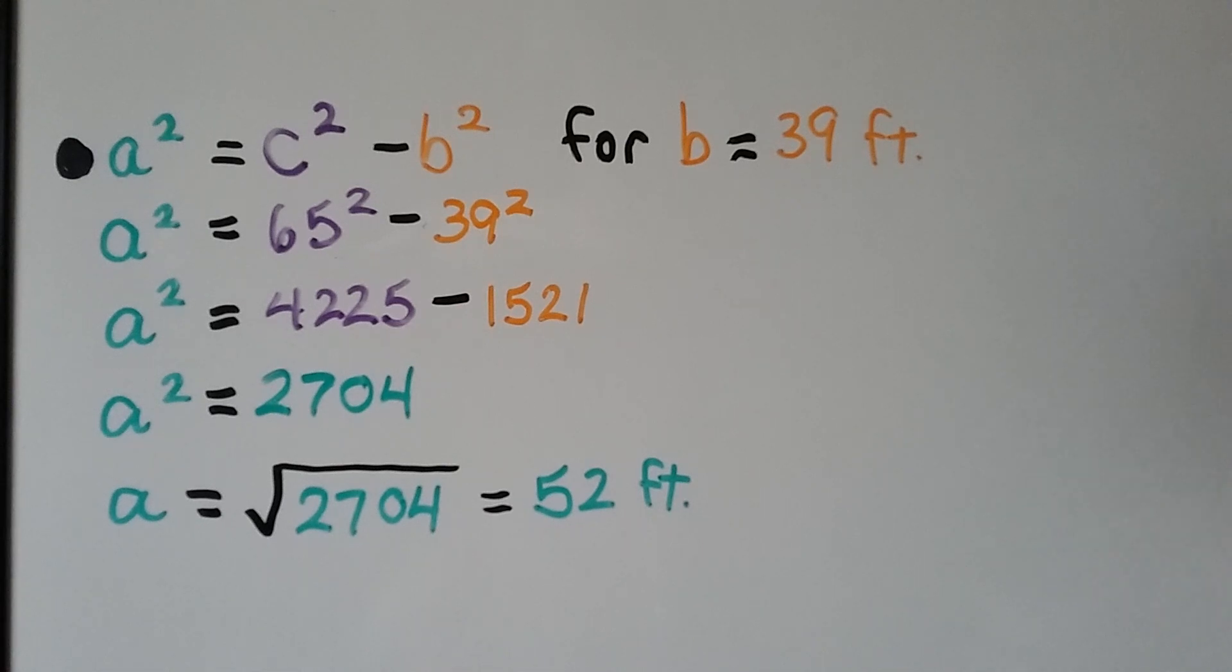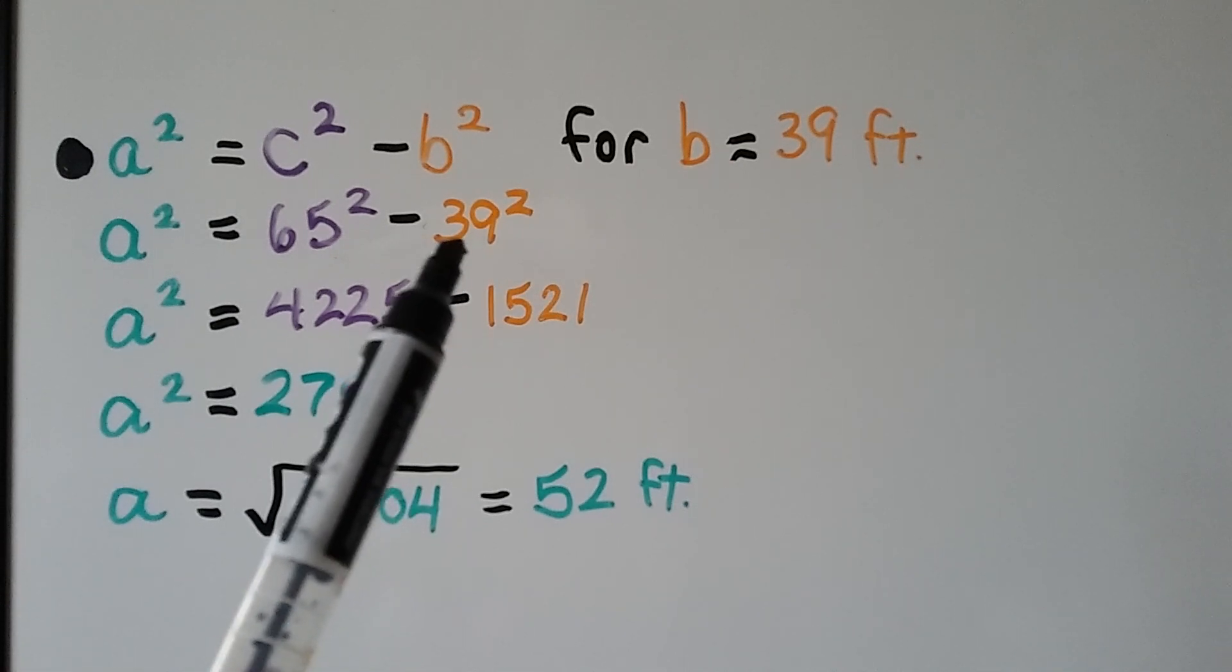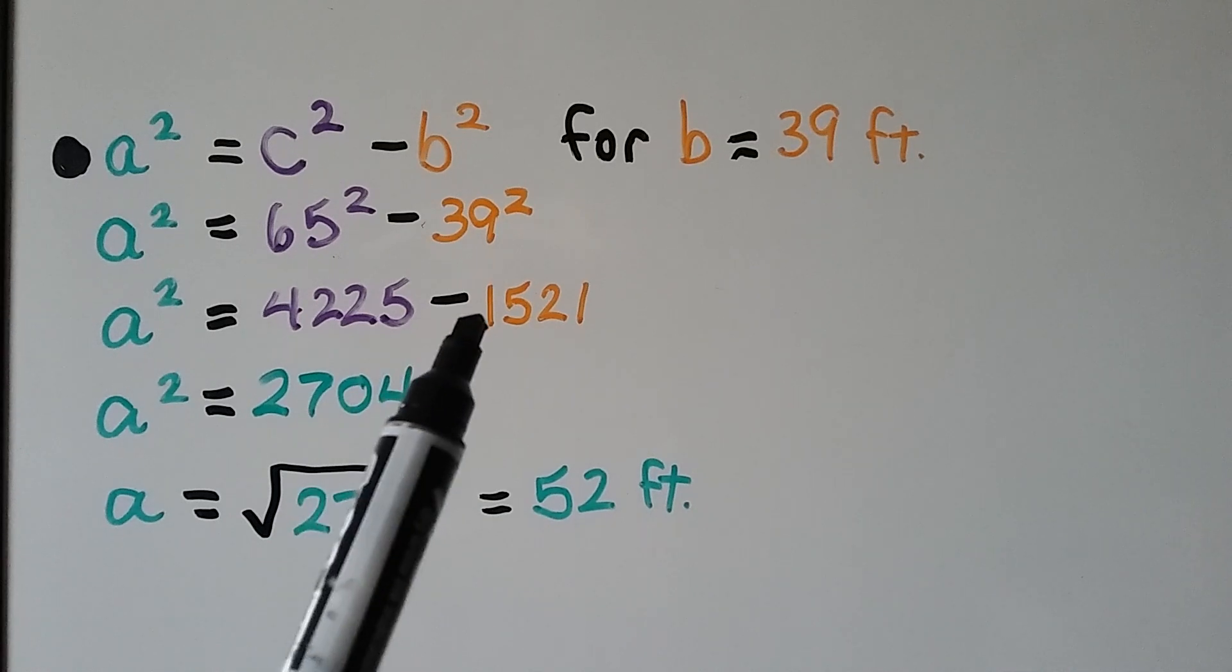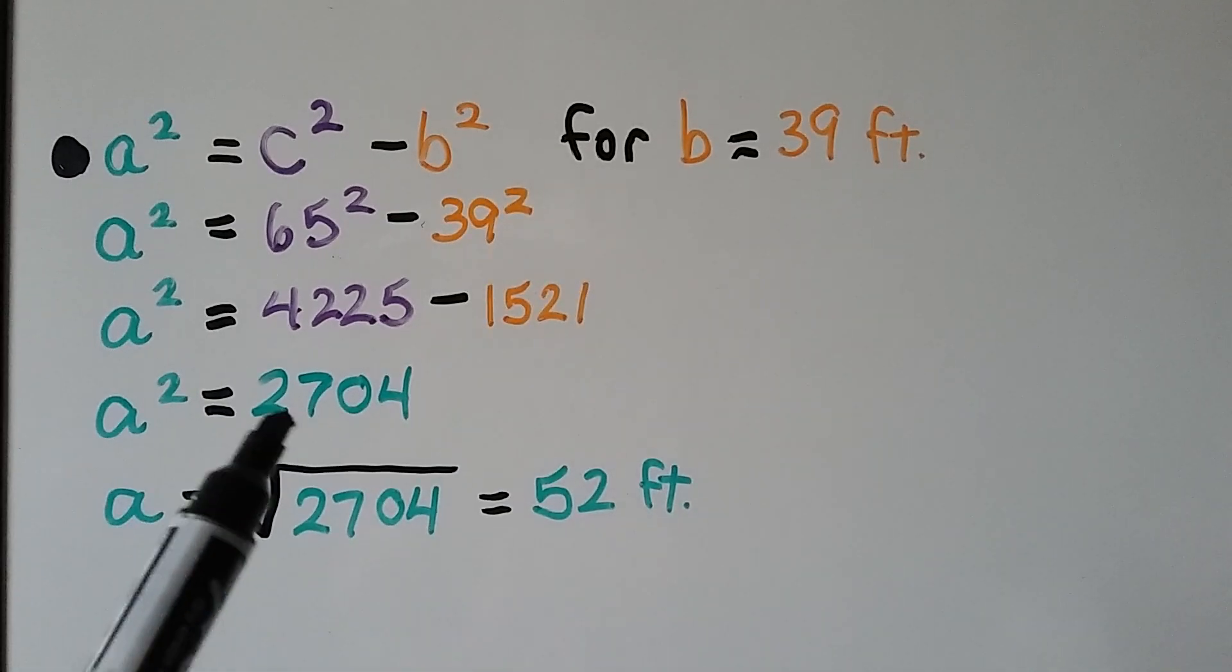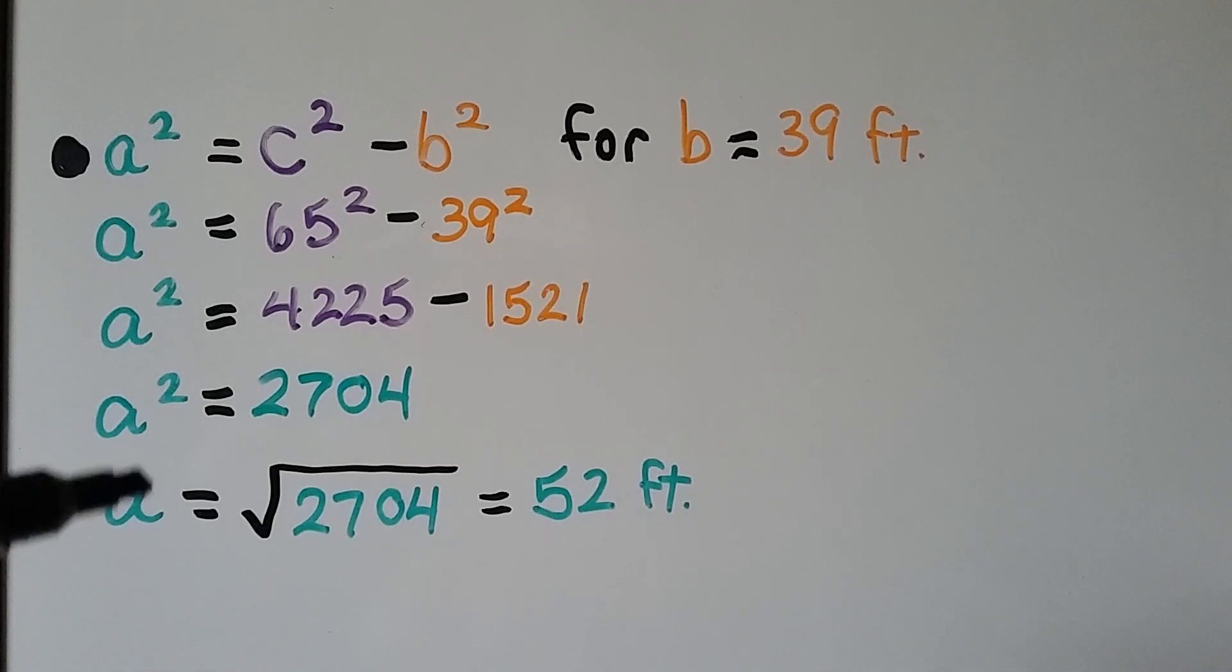And here's our last value for leg b. It's 39 feet. So we have 39 squared here in our rearranged formula. So now it means we have 4,225 minus 1,521. That's 39 squared. It's going to equal 2,704. So we take the exponent off by putting a radical sign around this and we end up with 52 feet.